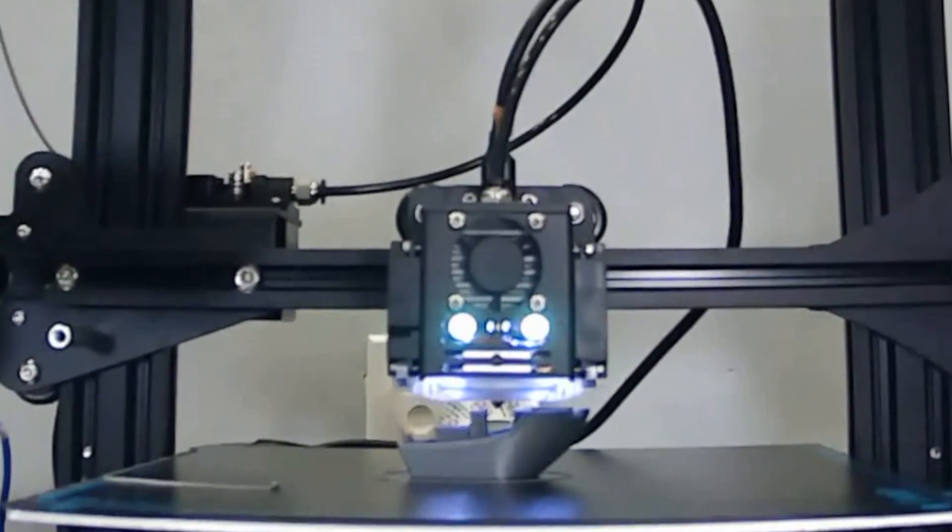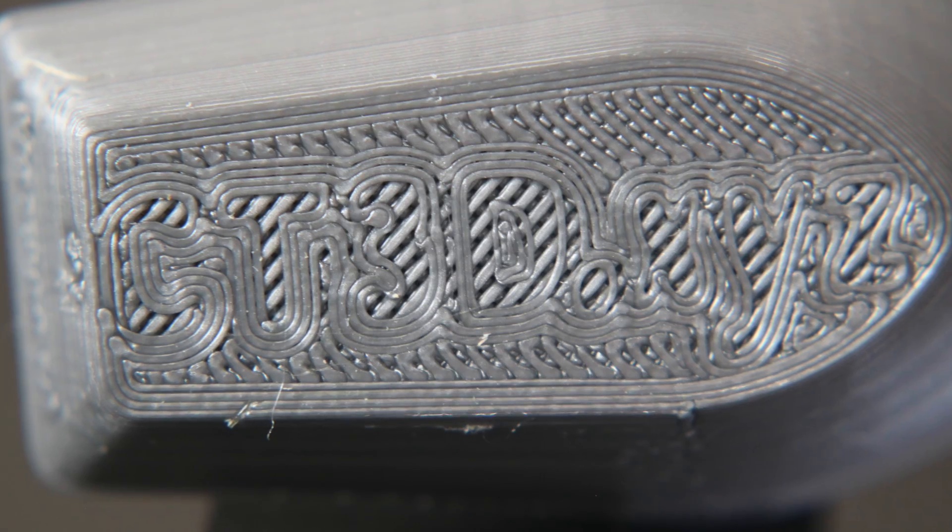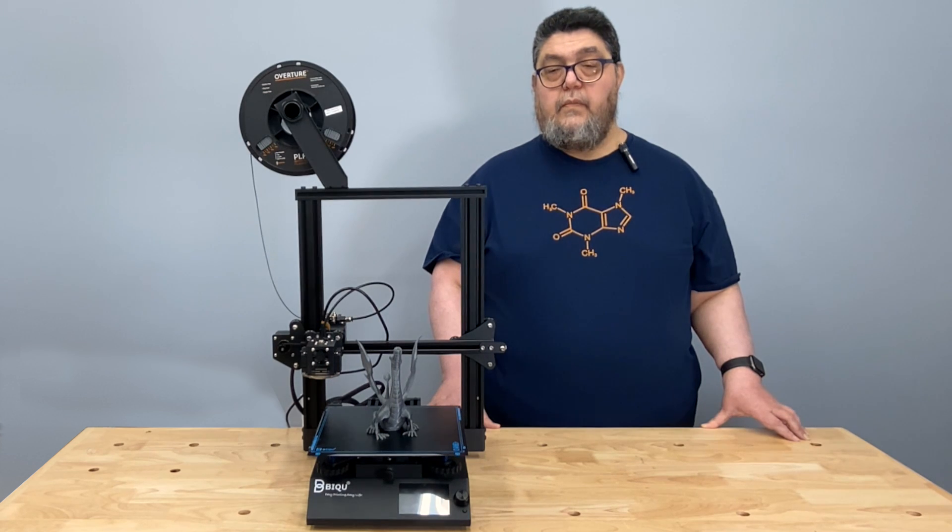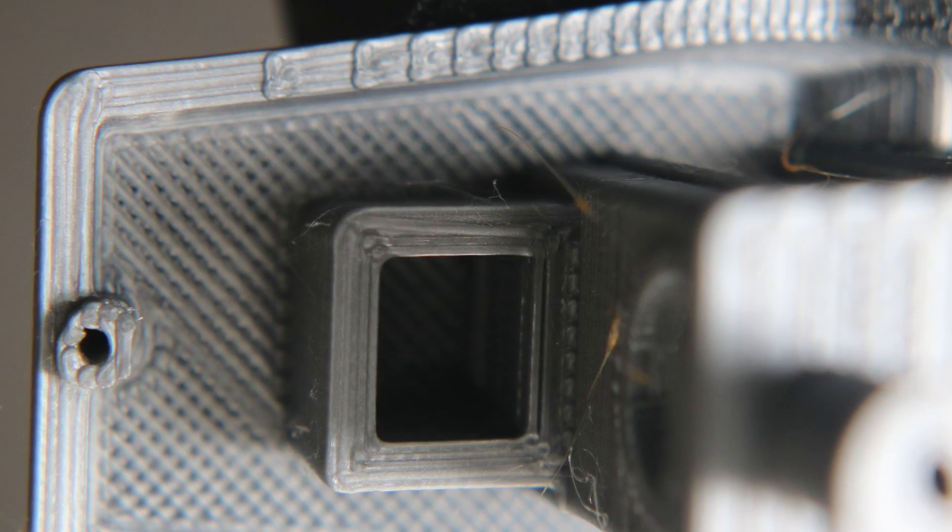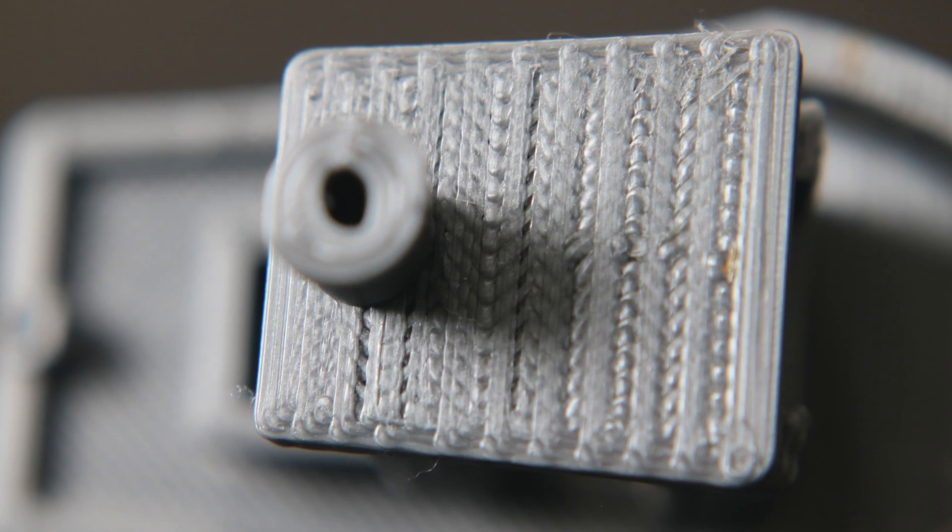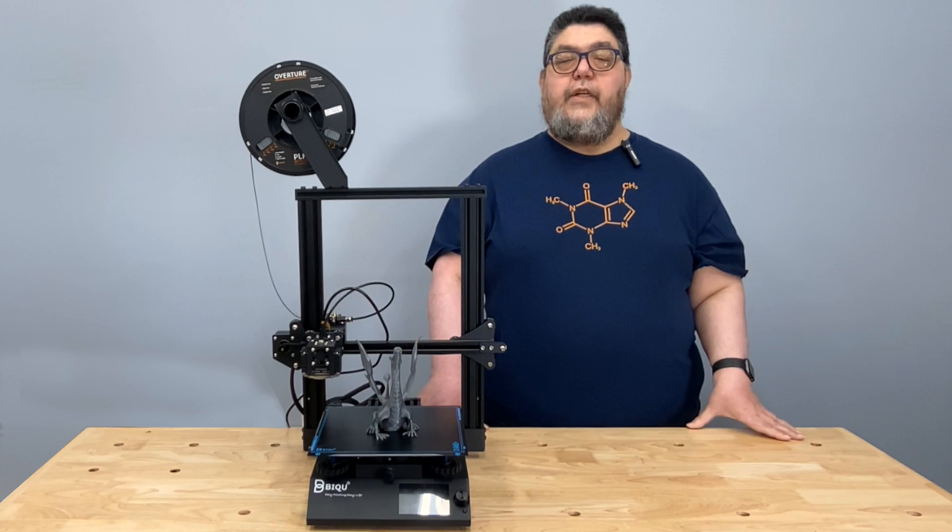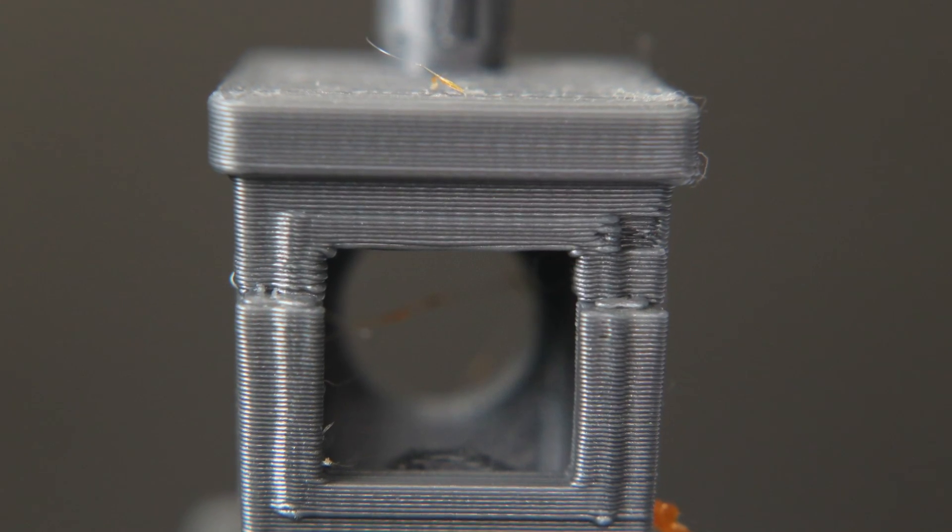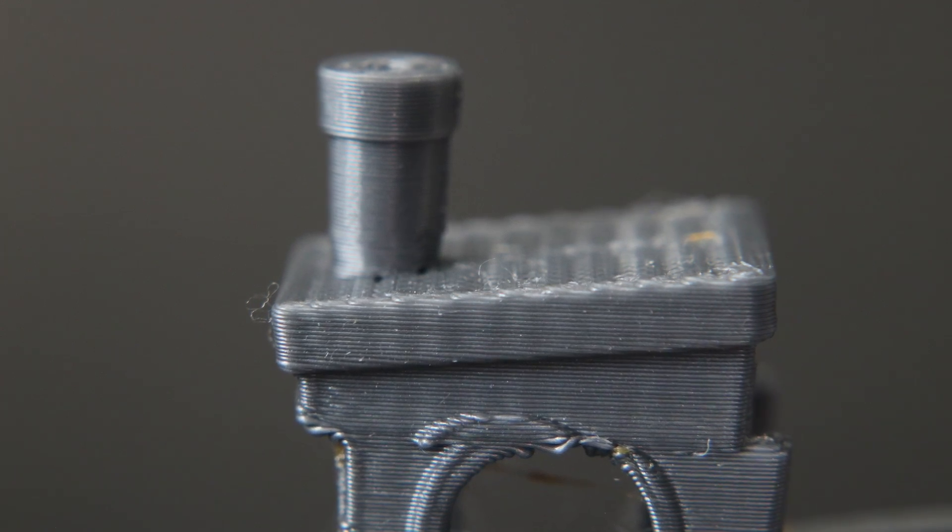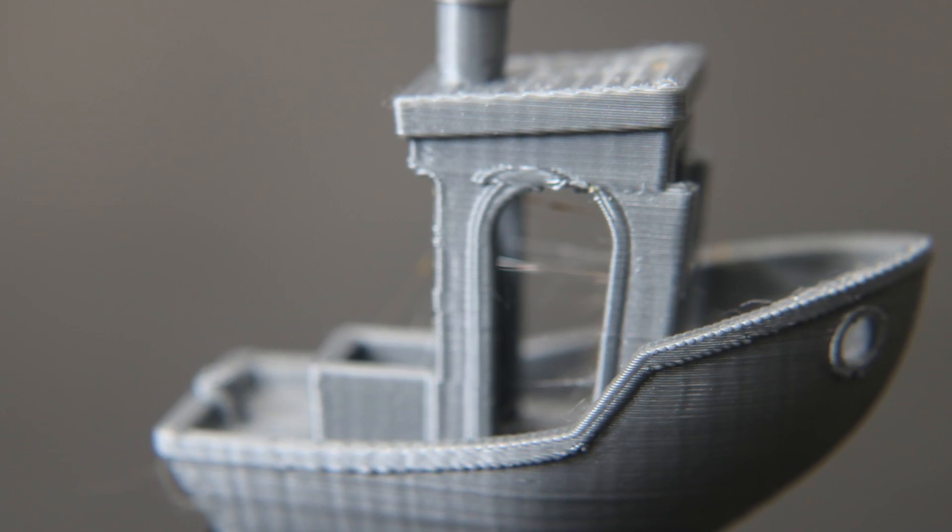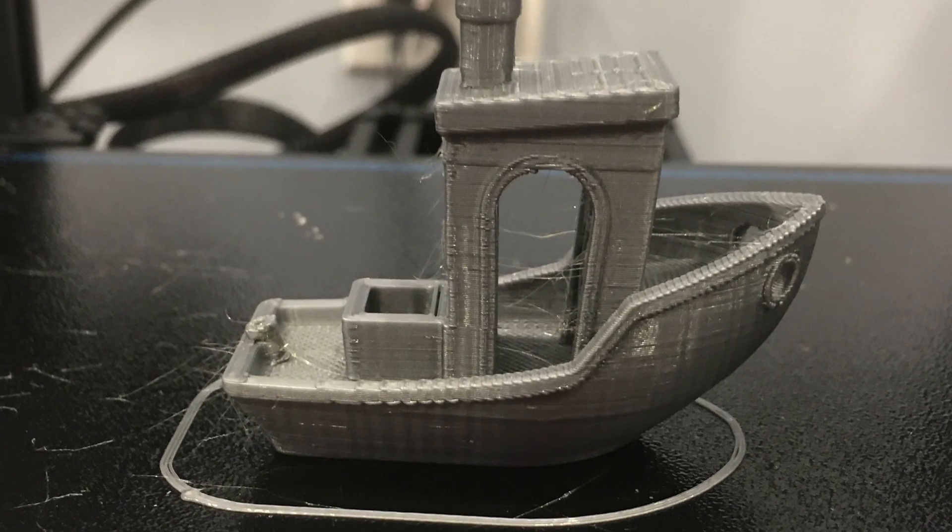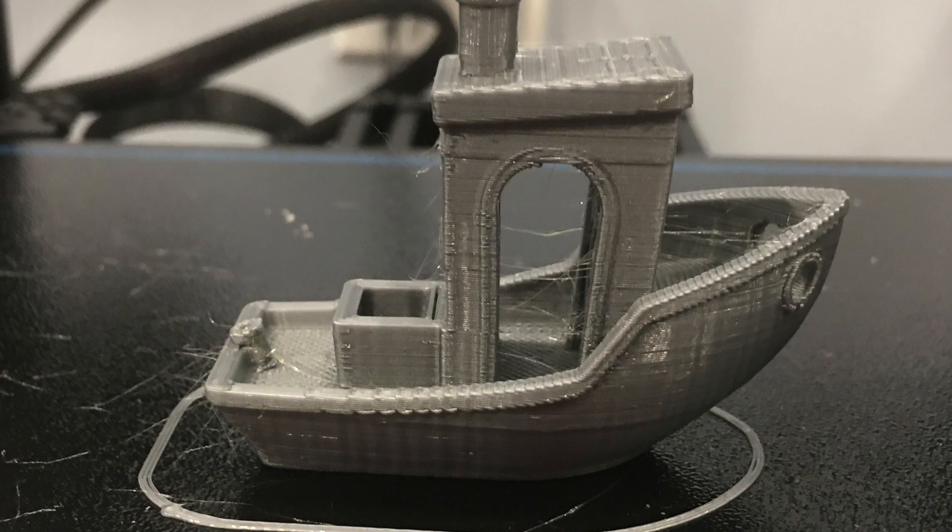Finally, let's take a look at the Benchy. This proved a bit problematic. You can see from this bottom shot that the first layer prints with good definition. You can see a nice texture on the deck from this top view, and as we pull back focus, you can see how well defined the smokestack and the roof are. And while bridging, as seen over the front window, holds its definition nicely, you can see some pronounced layer shift. Looking at the print from the side, you can see the layer shift is even more pronounced, and you can see there's a lot of stringing as well. I did a second print of the Benchy, and while the layer shift wasn't as pronounced, it was still there.